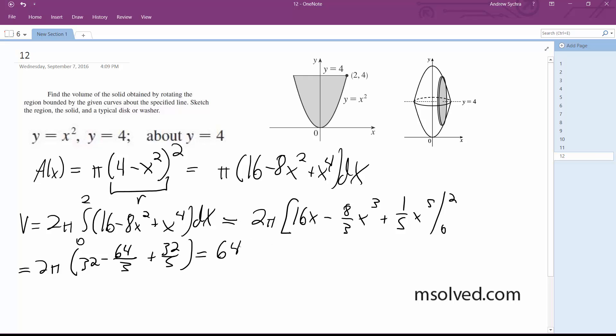Which is equal to 64 pi times 1 minus 2 thirds plus 1 fifth, which is equal to 64 pi times 8 over 15, which is equal to 512 pi over 15. That's it, that's awesome.